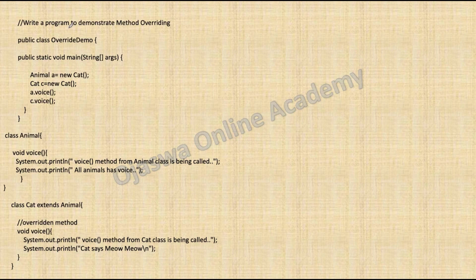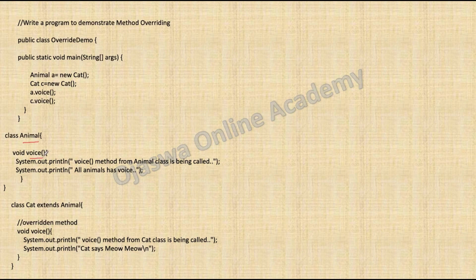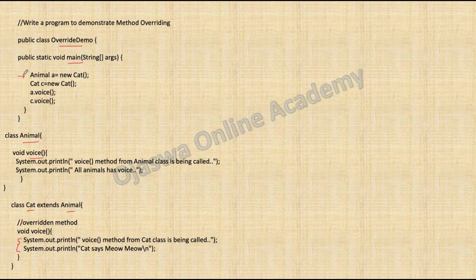So this was method overriding. Now we write a Java program to demonstrate method overriding. We are going to implement the same real-life example of class Animal and Cat. By implementing real-life examples in programming code, it is easier to relate and understand the concepts. In this program, we have class Animal that contains a method void voice — it has default access modifier, return type void, name is voice, and it is not taking any parameters. Then we have class Cat extends Animal, where we have done method overriding with void voice and no parameters, following the exact signature but with a different implementation.